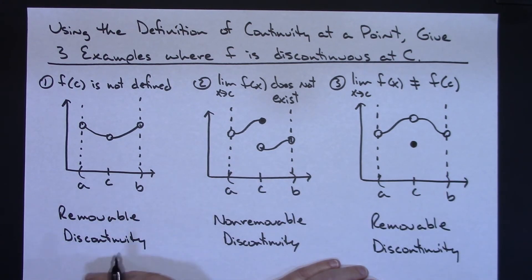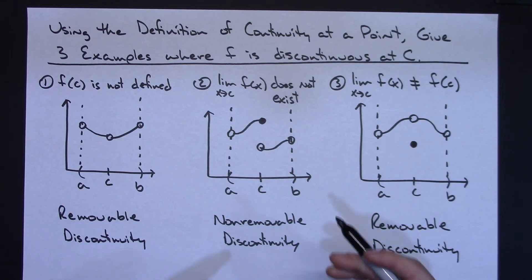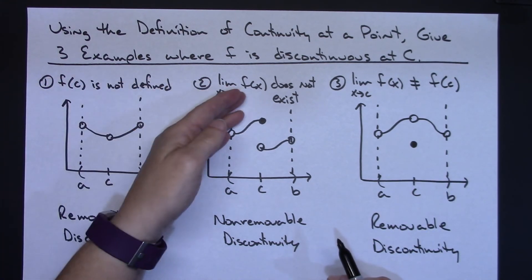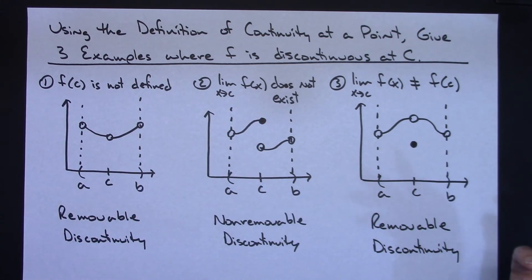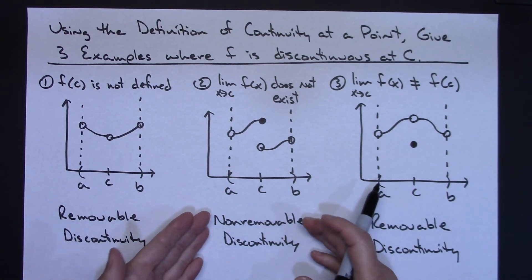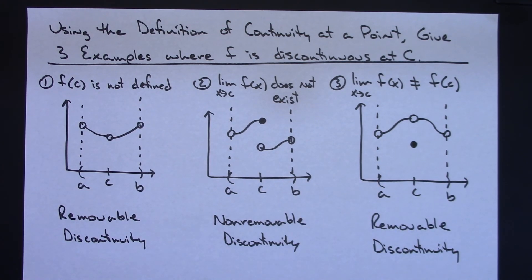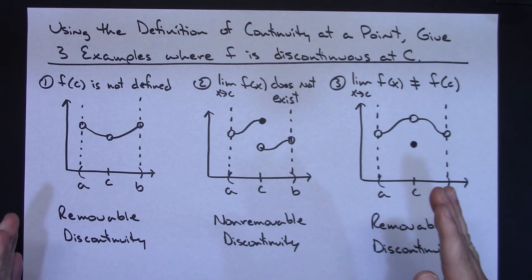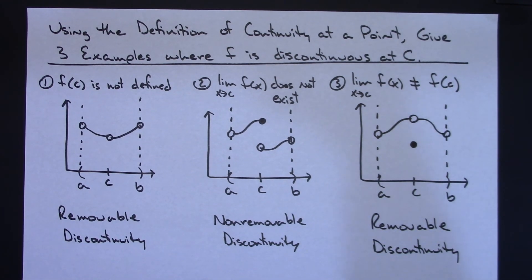So those are three examples using the definition of continuity at a point, showing where it would be discontinuous at c. If any one of those conditions is not met, that's what the pictures look like. Two of them are classified as removable discontinuities, and the middle one with the jump is the only non-removable one. Thanks for watching and be sure to share with your friends.